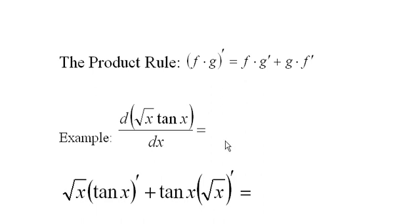The example we're going to look at is the derivative of the square root of x times the tangent of x. In order to do this problem, you must be able to individually differentiate the square root of x and the tangent of x.